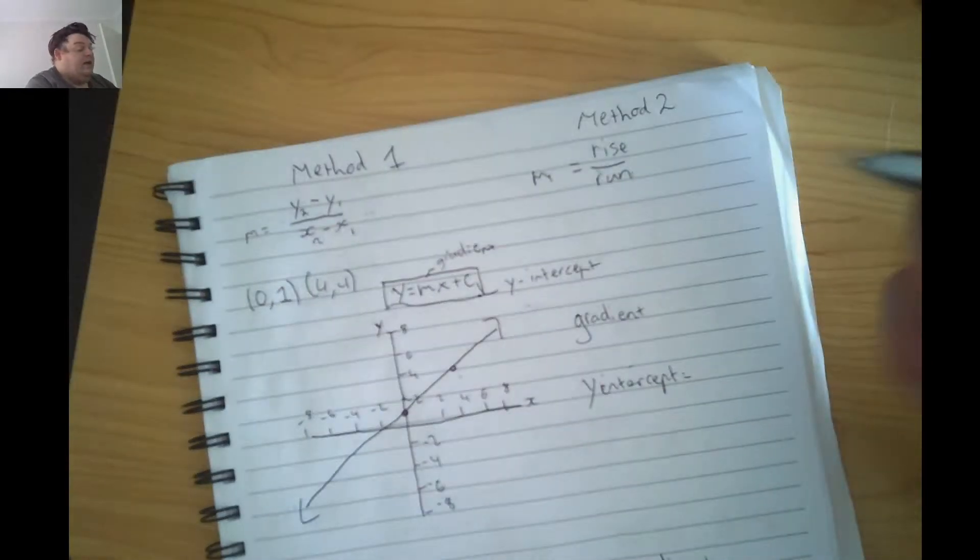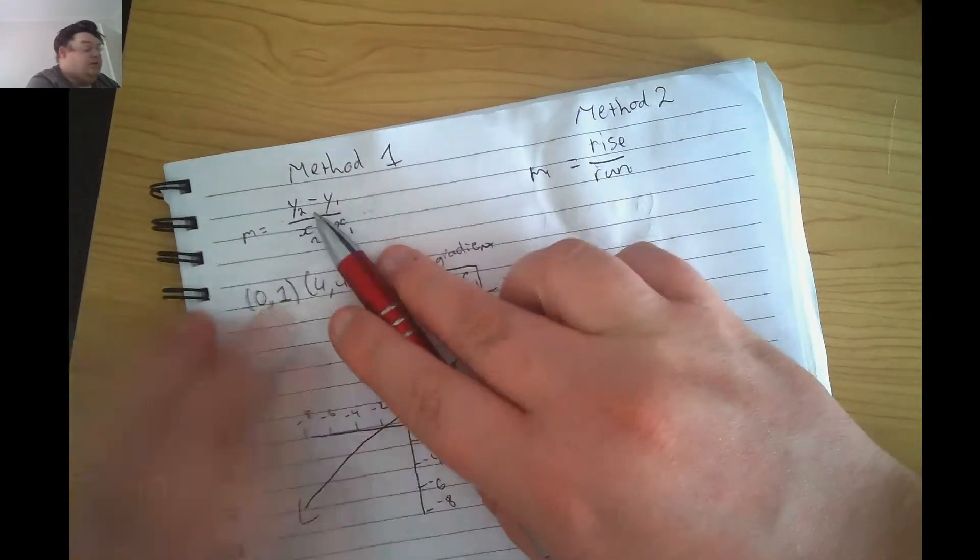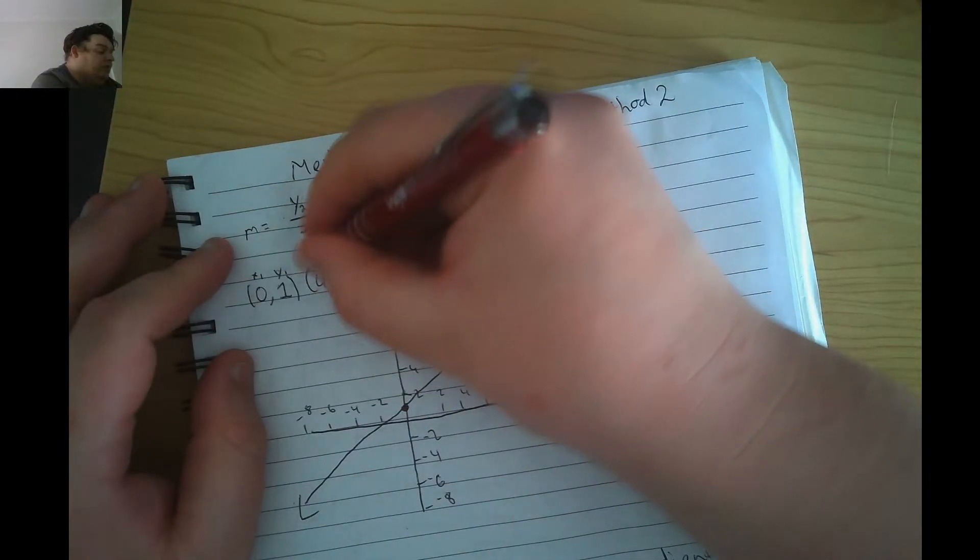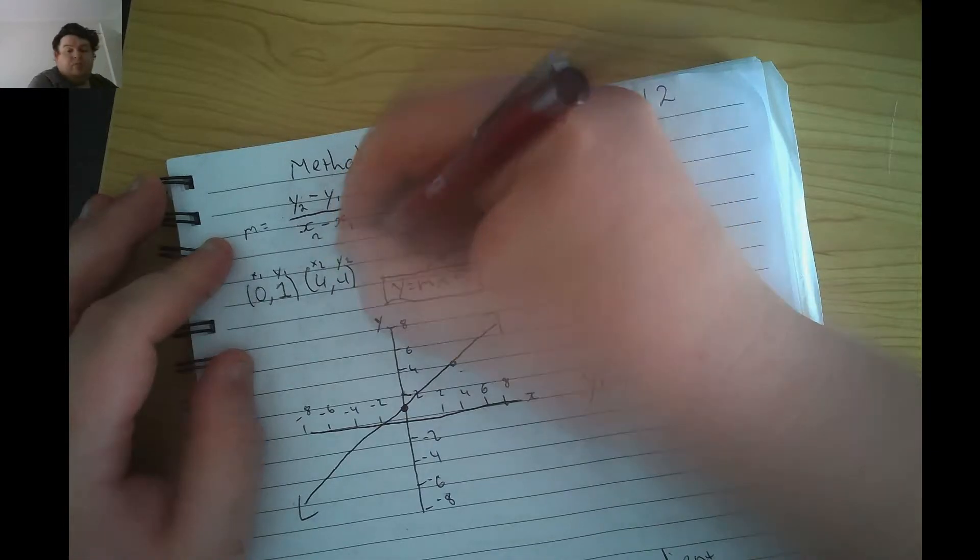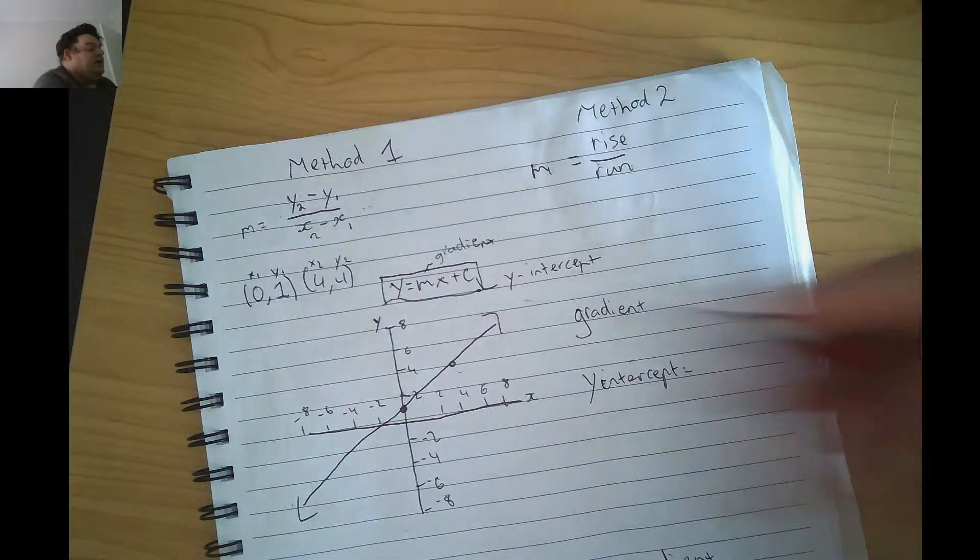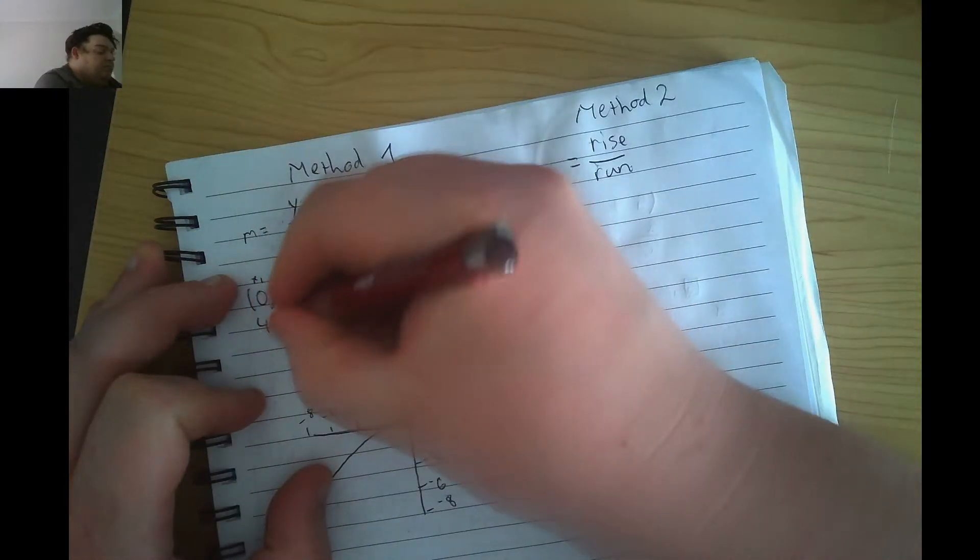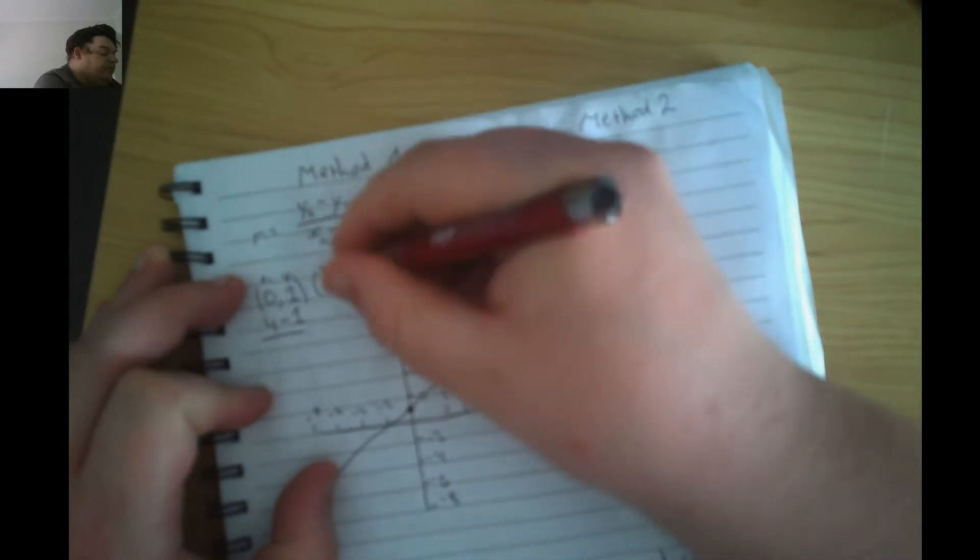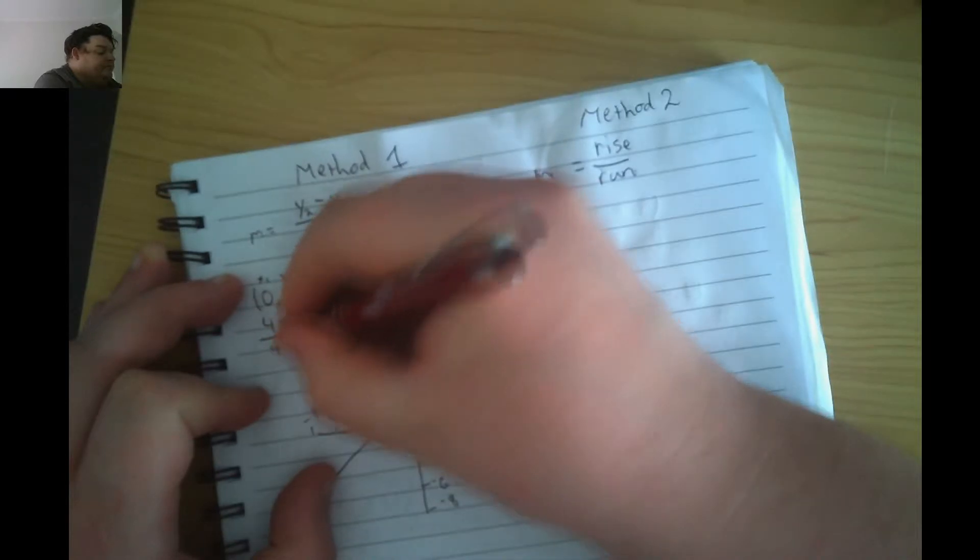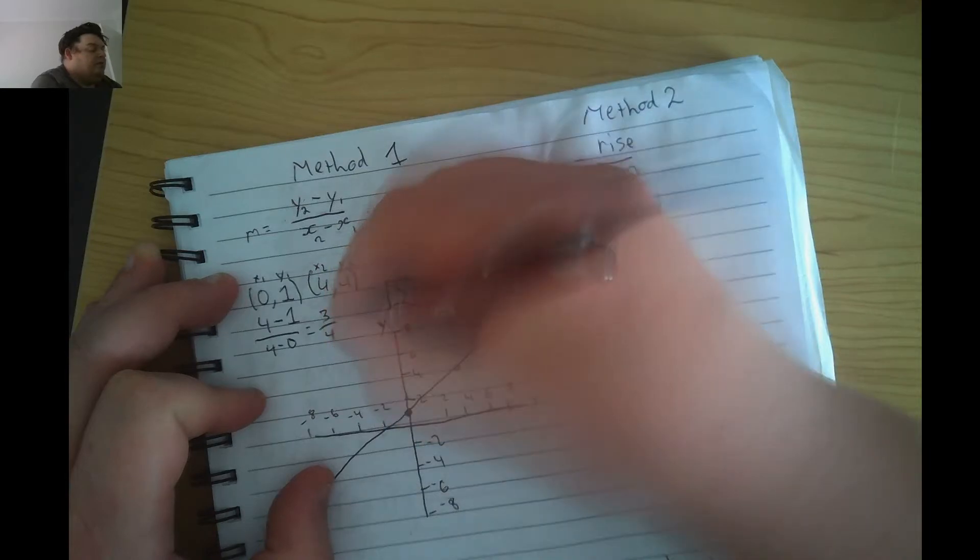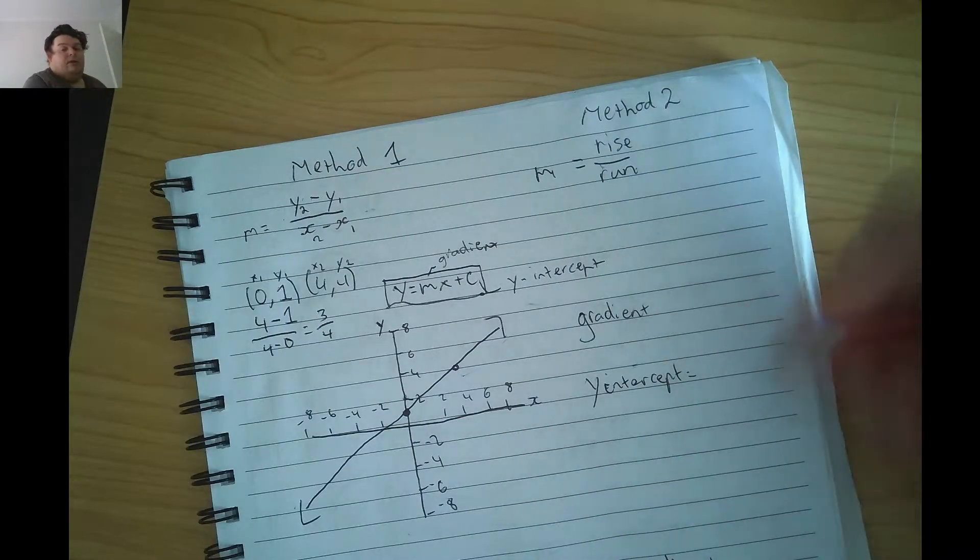I'll show you both ways of solving for gradient right now. We have the first one, we just arbitrarily assign these as x1, y1, x2, y2. It doesn't matter which point you do in what order, it will still work out the same. So do y2 take away y1, so y2 is 4 minus y1 is 1, divided by x2 which is 4 minus x1 which is 0. So that gives me 3, 4 minus 1 is 3, 4 minus 0 is 4.